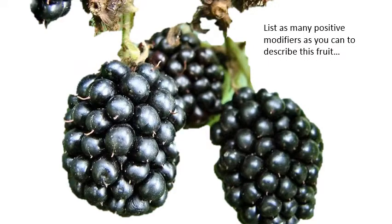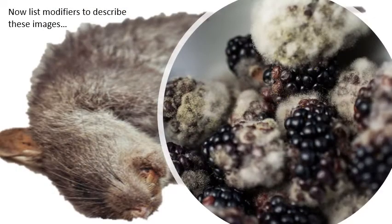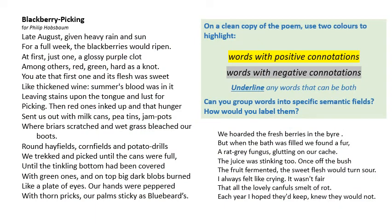Now in your book, I want you to list as many positive modifiers as you can to describe this fruit. Use lots of adjectives if you can. And if you are doing something with the fruit — eating it, cooking it, preparing it — think about adverbs that you might use to describe how you process or deal with the fruit. Now look at these images. Which words would you use to describe these? Find a clean copy of the poem, and then with two different highlighters, highlight positive words in one colour and any negative words in another colour. Think about the connotations of those words and what makes them positive or negative. And if you can't decide, if you think something's neutral, you could underline it.